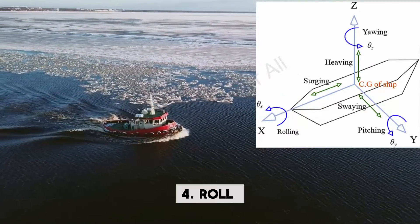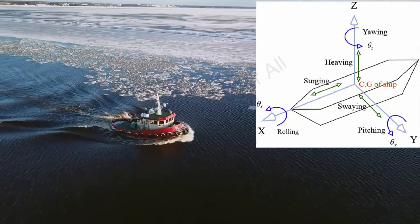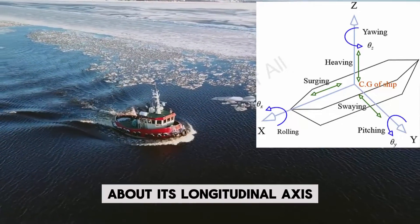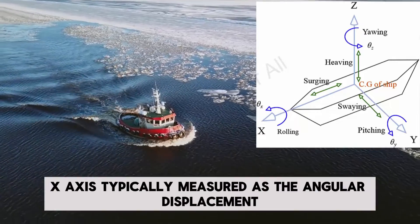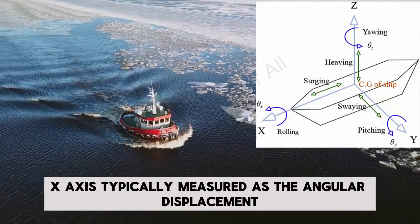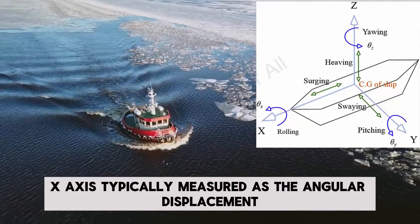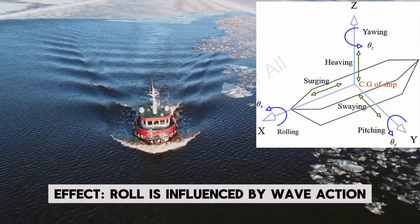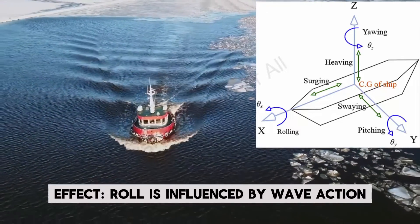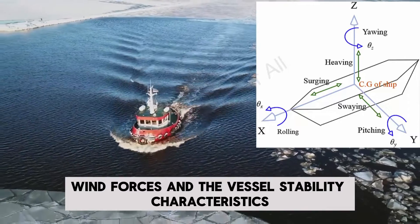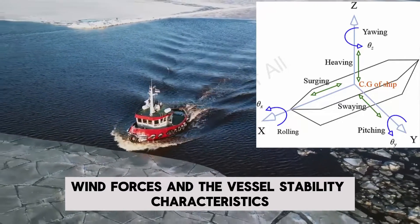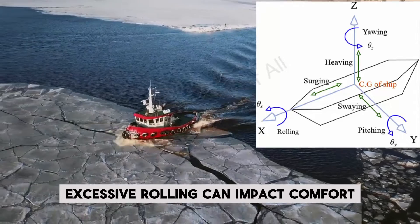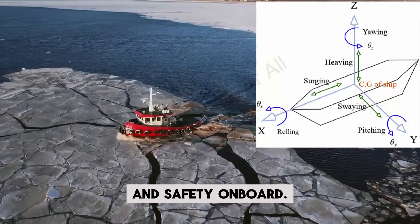4. Roll. Definition: Roll is the rotational movement of the vessel about its longitudinal axis (x-axis), typically measured as the angular displacement from side to side. Effect: Roll is influenced by wave action, wind forces, and the vessel's stability characteristics. Excessive rolling can impact comfort and safety on board.